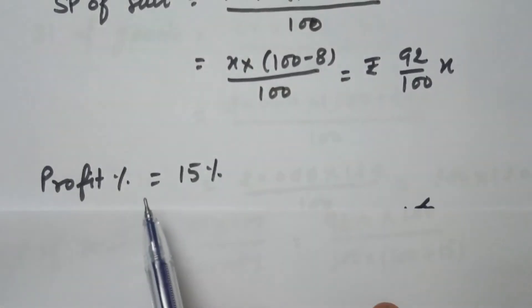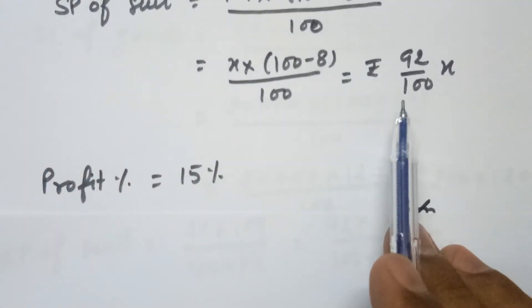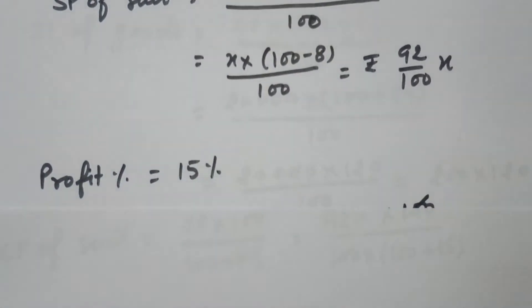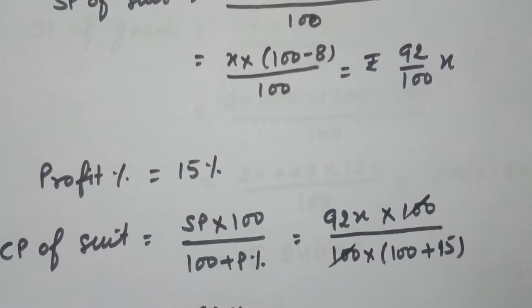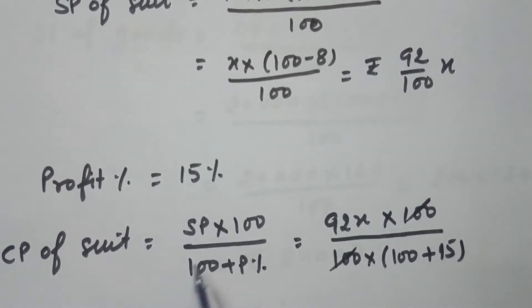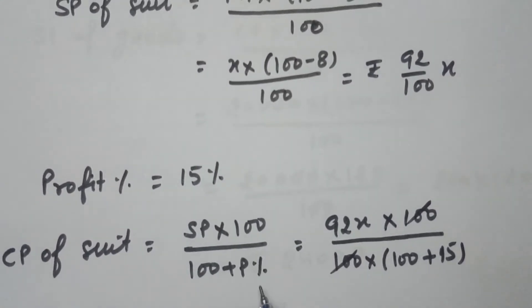Now as the profit percent is given, selling price we have calculated, profit is given, so we can find cost price. Cost price is SP times 100 over 100 plus profit percent.